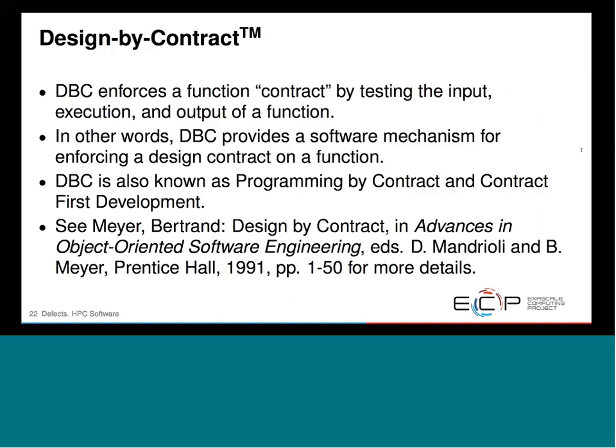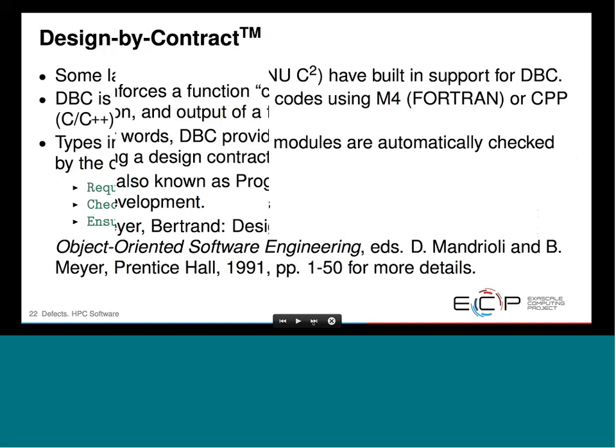DBC is a software mechanism for disambiguating the requirements on a function — getting away from fluffy human language where you take something to mean one thing and I have a different intent. It's also known in the open source world as programming by contract and contract-first development — if you see those terms, they refer to the same thing.